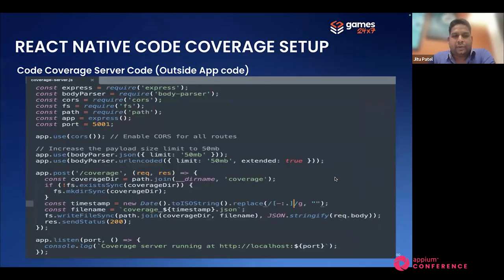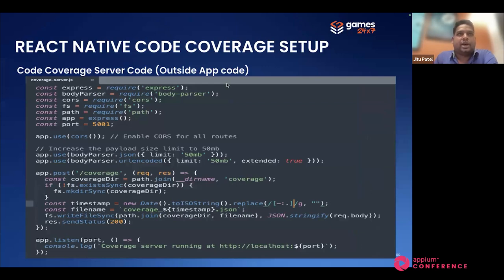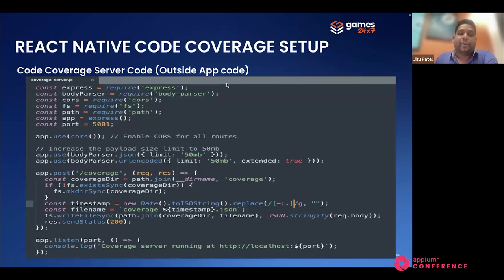The coverage server is normally one server running with a coverage endpoint. When the application goes to background, it throws how many actions were done in the UI and the coverage data to the coverage server. The coverage server accumulates all that information and dumps it in local storage.